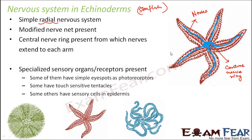Specialized sensory organs are also present in echinoderms. Some have simple eye spots acting as photoreceptors. Some have tentacle-like structures sensitive to touch. Others have sensory cells in the epidermis — on the surface of their body — which can act as tangoreceptors, thermoreceptors, or photoreceptors.